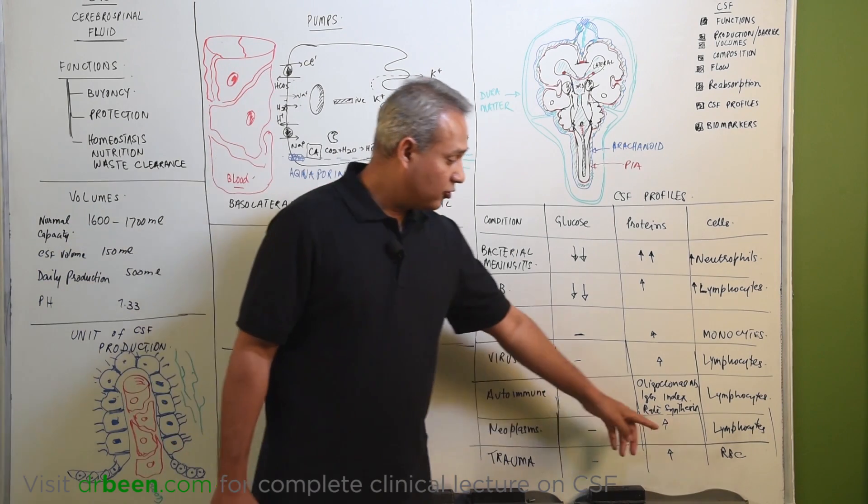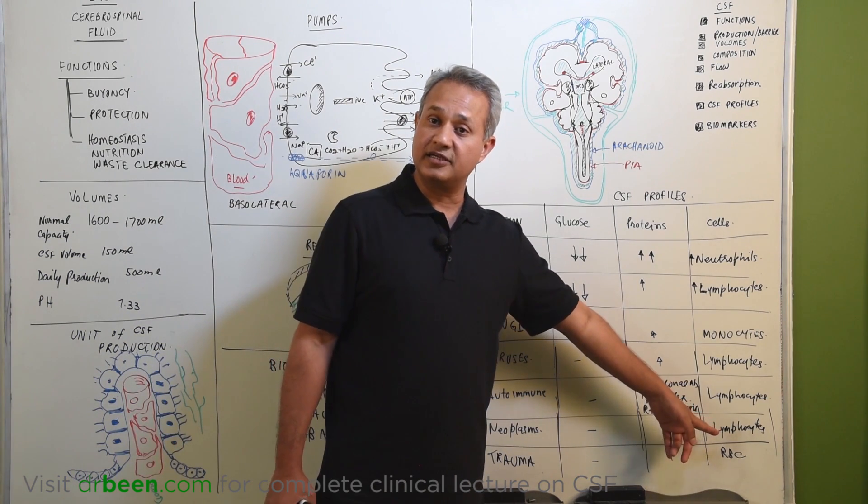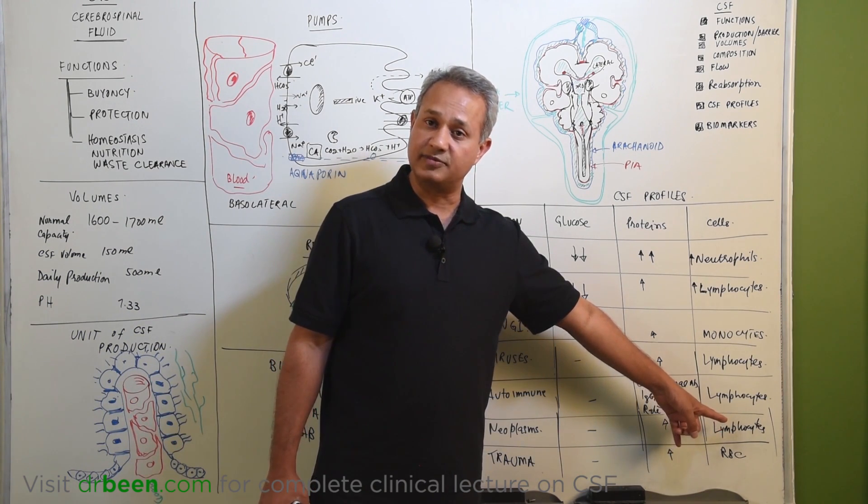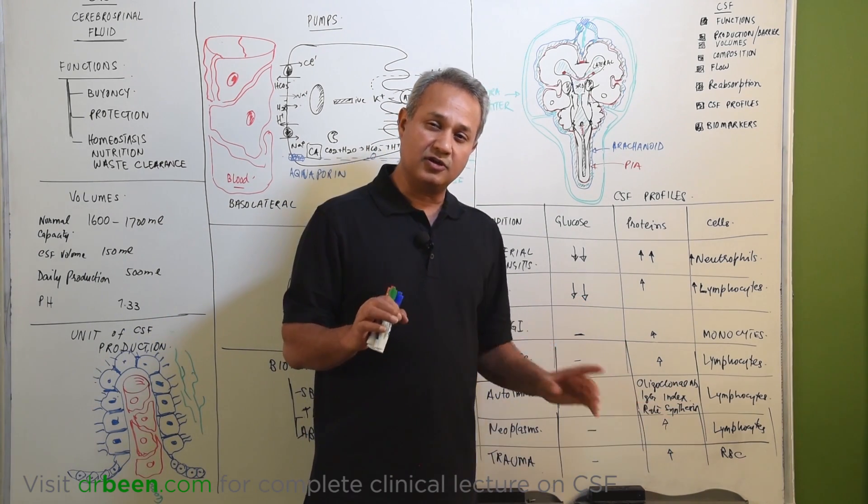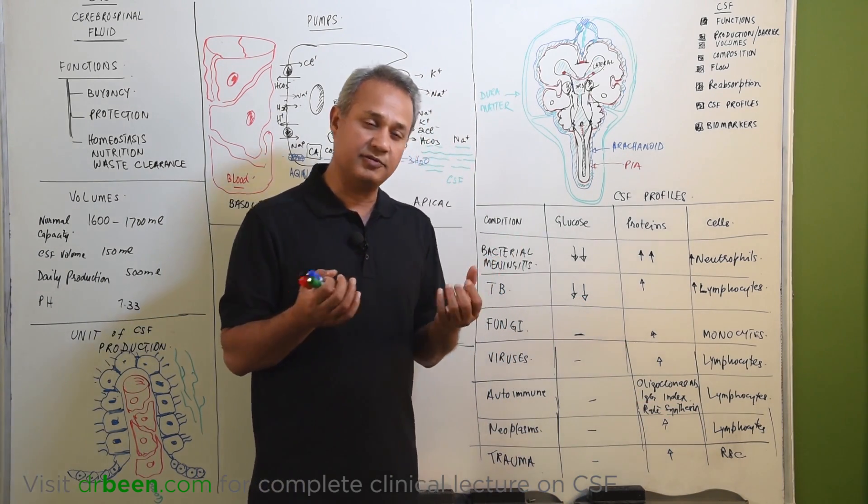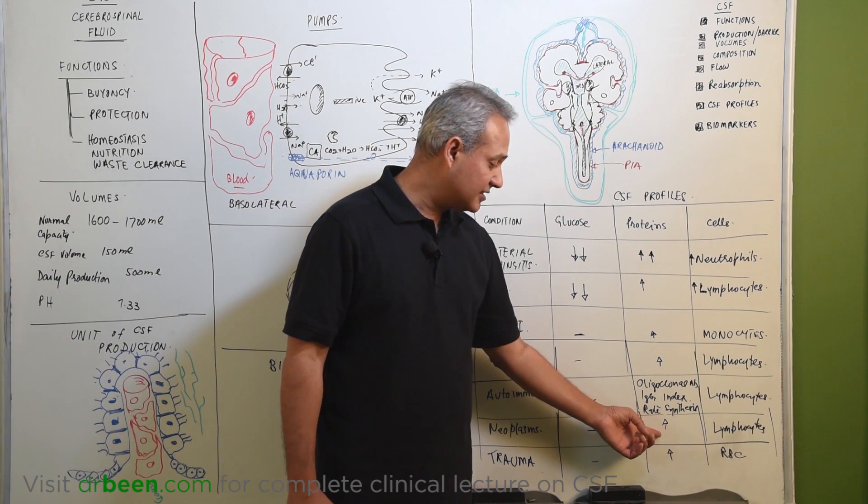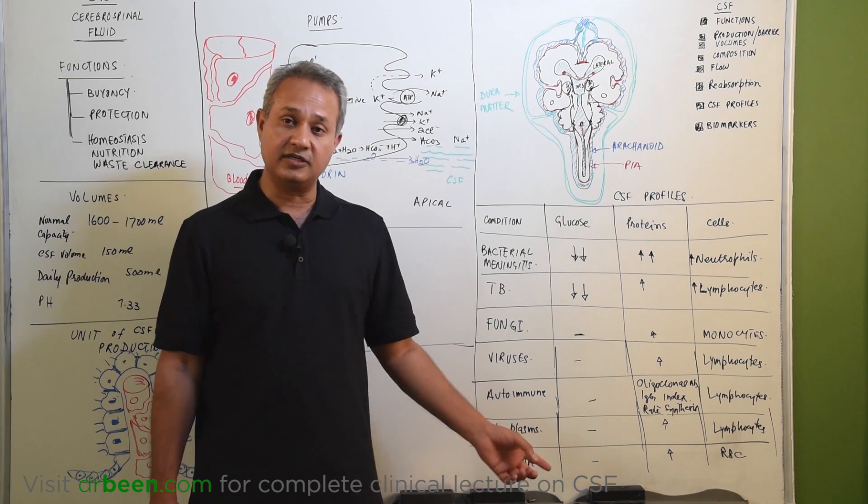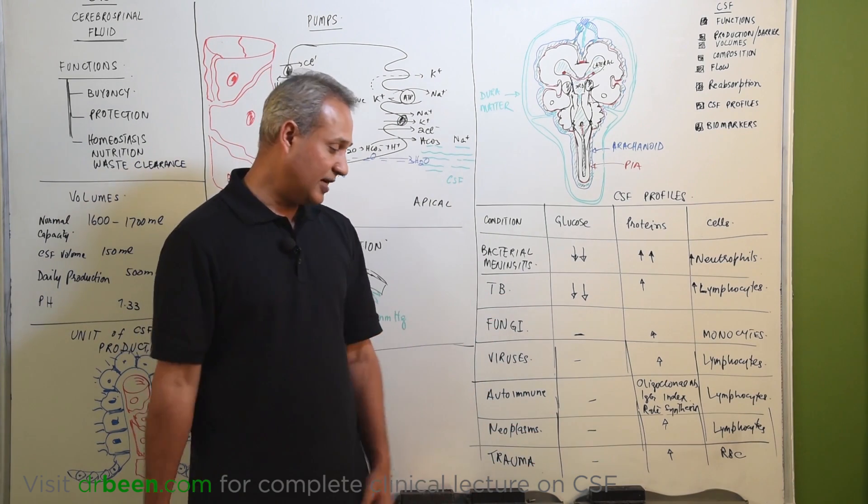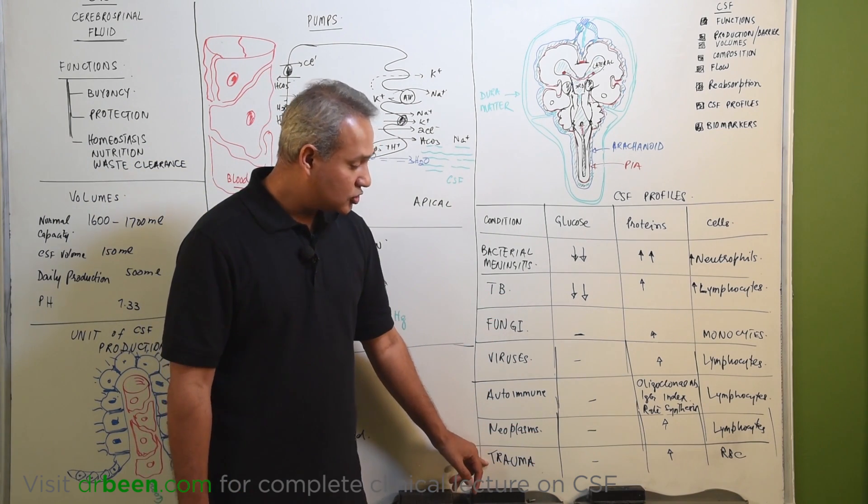Finally, neoplasms. Who handles the neoplasms? Natural killer cells and the T cells. So, the lymphocytes are present here as well. Increased proteins, well, if there is inflammation, normally not too much inflammation around the neoplastic cells. So, may be increased or not. Neoplastic cells will not be eating glucose, they would just be eating everything in balance. And finally, trauma.